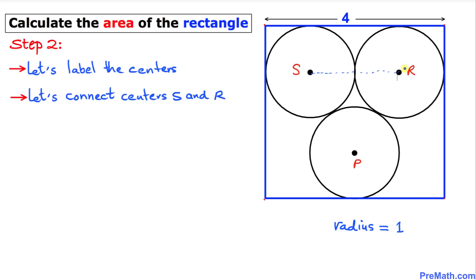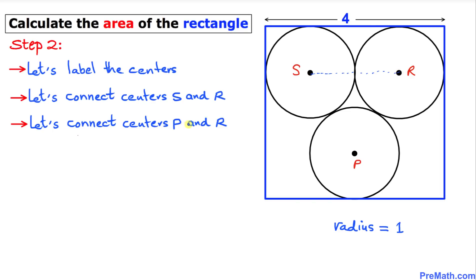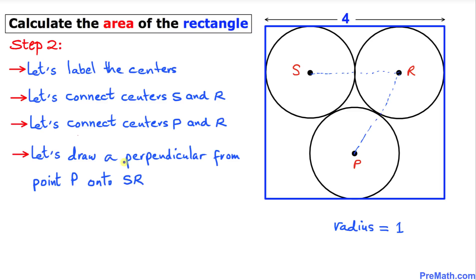We connect centers P and R as well. Finally, we draw a perpendicular from point P down onto line segment SR. I'll call the foot of that perpendicular point Q. Since this is a perpendicular, the angle at Q is 90 degrees.